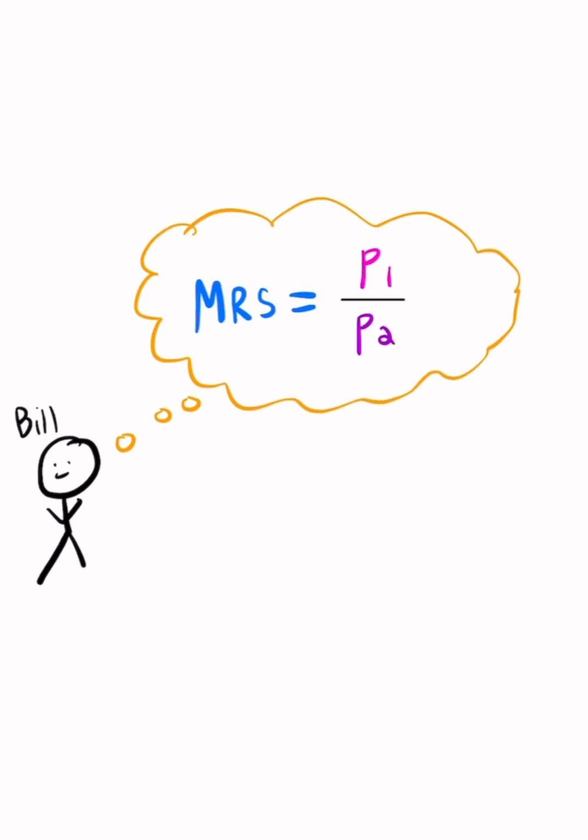We have a fancy word for the ratio of the marginal utilities which is the marginal rate of substitution or the MRS which is equal to the ratio of the prices. And this is why for utility maximization we set the MRS equal to the ratio of the prices.